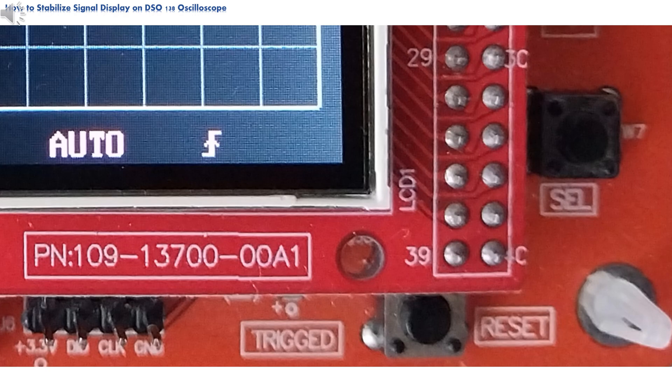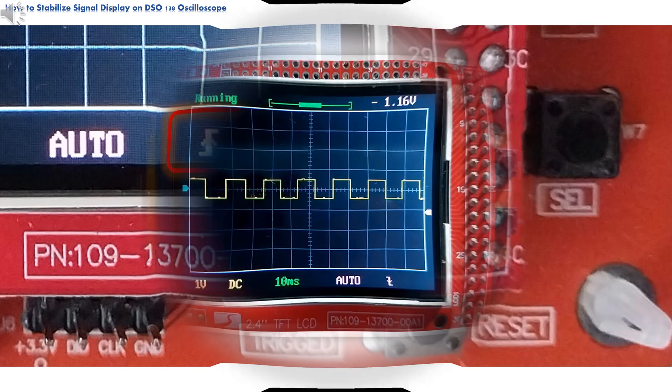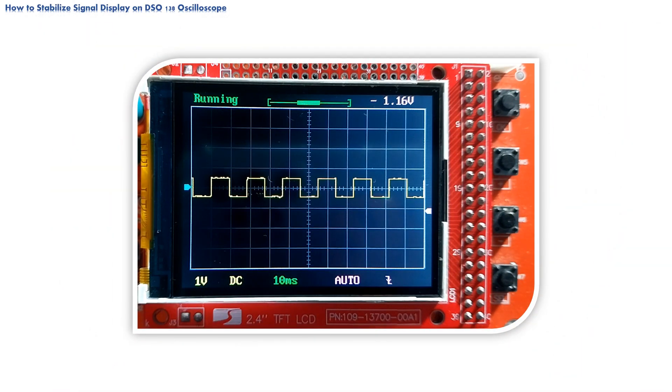By now, you may have noticed this strange-looking icon that appears at bottom of our display. It is used to set oscilloscope-trigged function. By pressing cell button, put focus on the trigged icon.